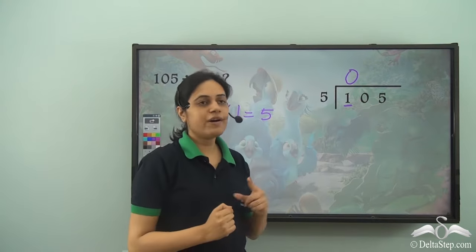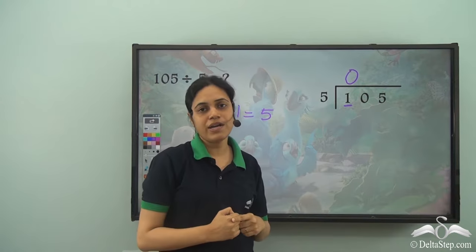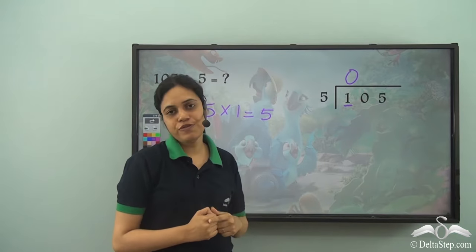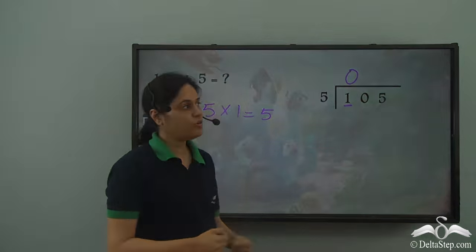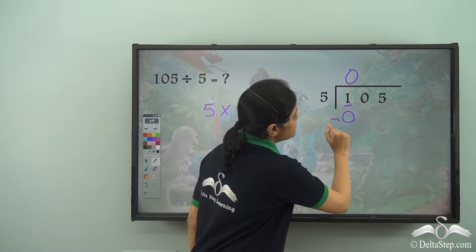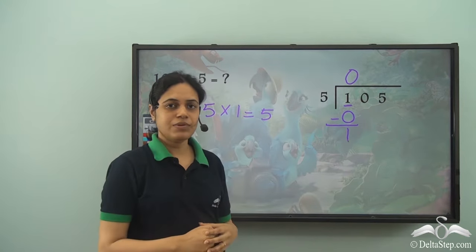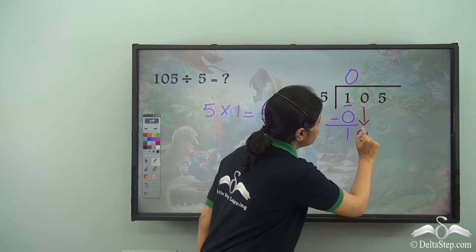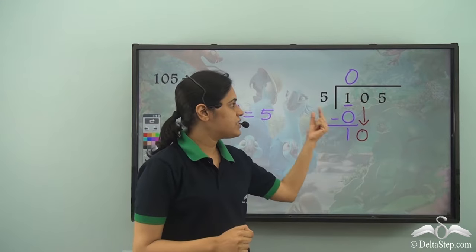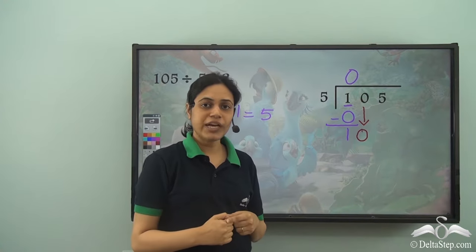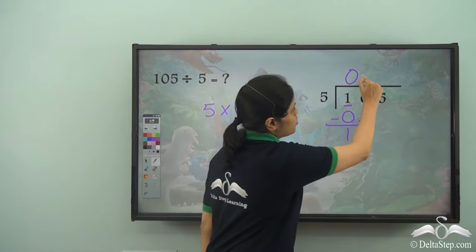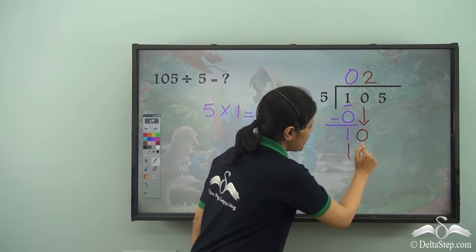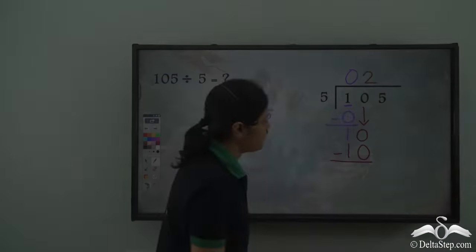So I write a 0 above 1. How many times does 5 go into 1? 0 times, because 1 is less than 5. And 0 into any number is 0, so 0 into 5 is 0. I subtract it to get 1. So I have 1 left over. Now I bring this 0 down to get 10. How many times does 5 go into 10? 2 times — 5 into 2 is 10. So I write a 2 above 0, because that is what I am considering right now. 2 into 5 is 10.